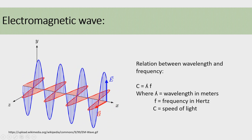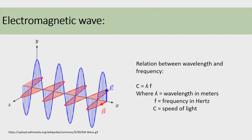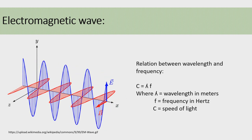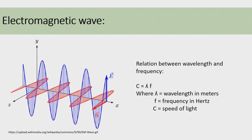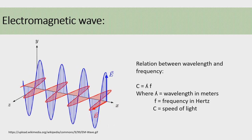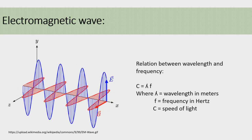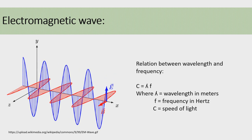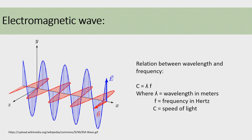The waves are periodic and repeat themselves in a particular manner. The number of repetitions of waves per second is called the frequency of the wave, measured in hertz. C is the speed of light, the fastest speed in the universe, equal to 3 × 10⁸ meters per second.